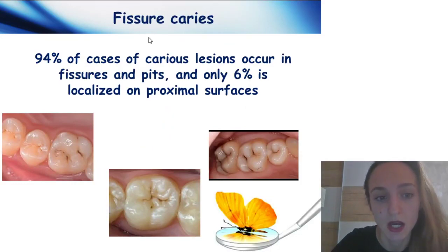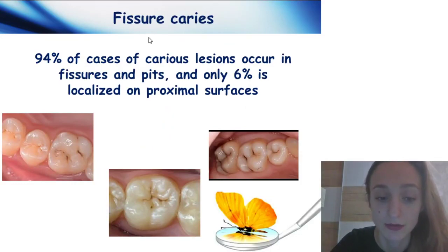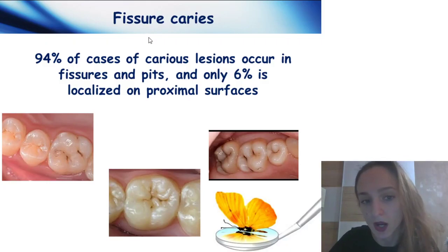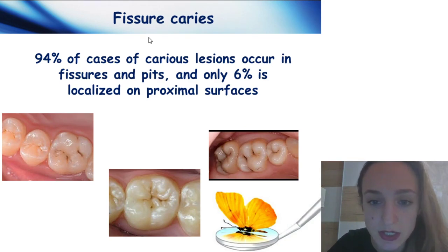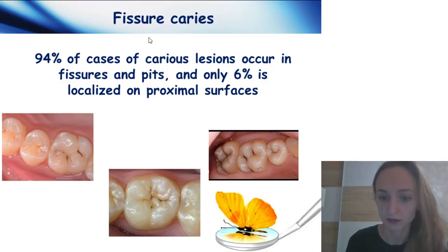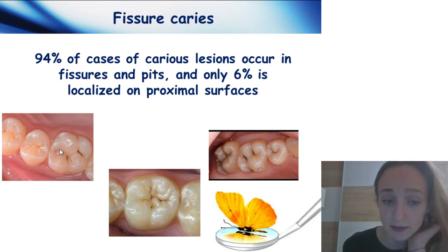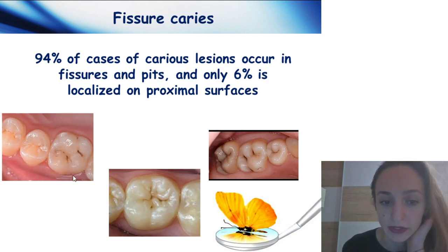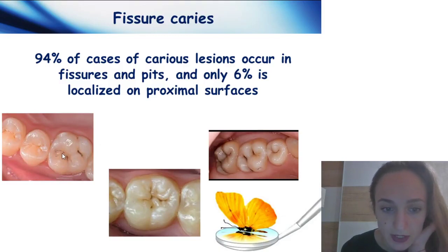Fissure caries: 94% of cases of different caries lesions occur in fissures and pits, and only 6% is localized on proximal surfaces. These clinical cases demonstrate first permanent molars. You can see fissure decay in these molars.